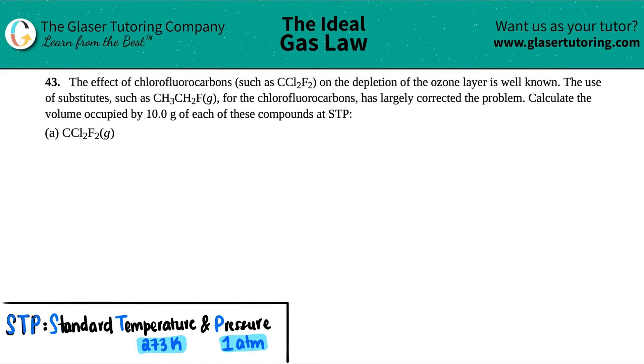Number 43. The effect of chlorofluorocarbons, such as CCl2F2, on the depletion of the ozone layer is well known. The use of substitutes, such as CH3CH2F for the chlorofluorocarbons, has largely corrected the problem. Calculate the volume occupied by 10.0 grams of each of these compounds at STP.